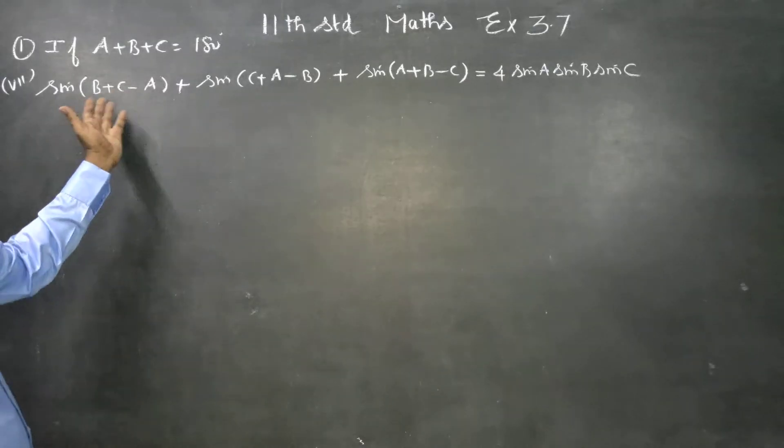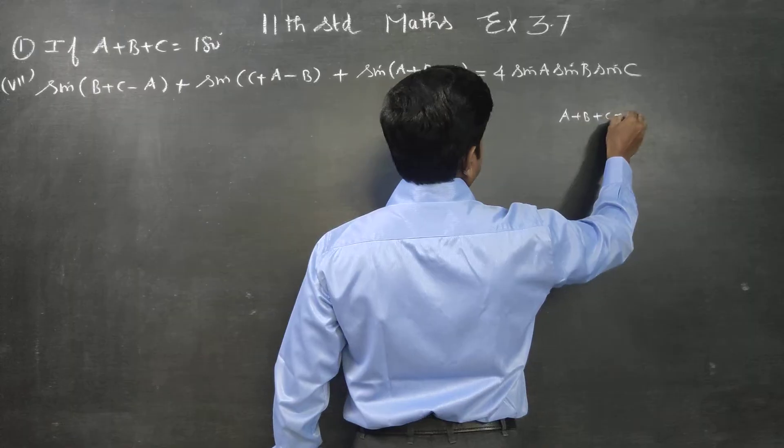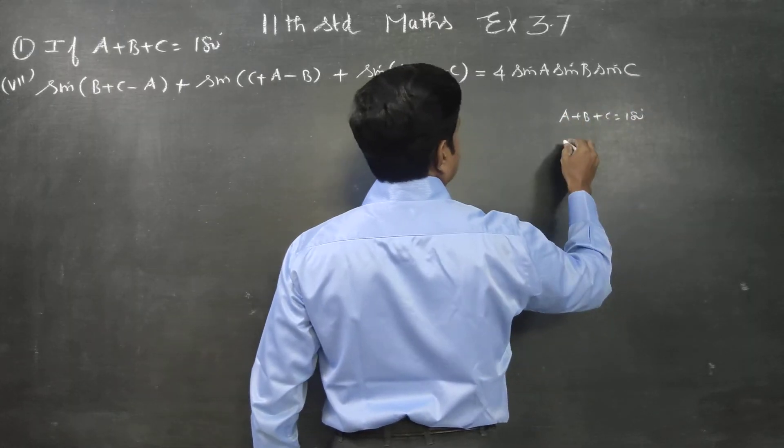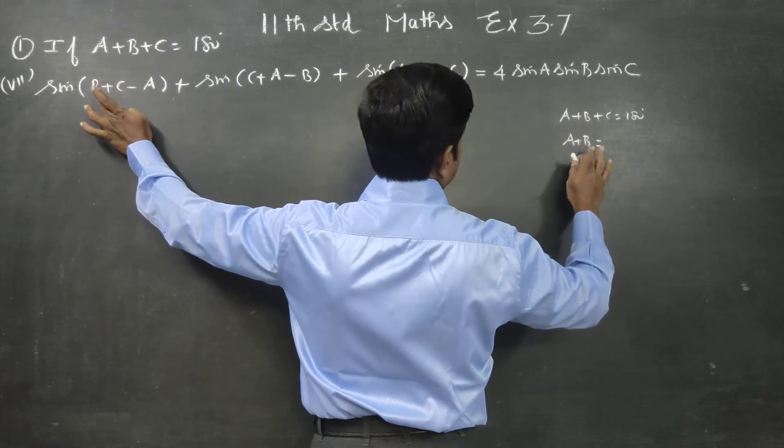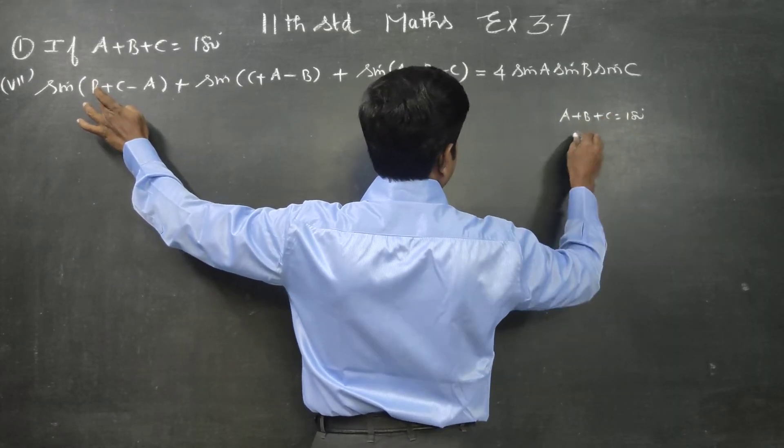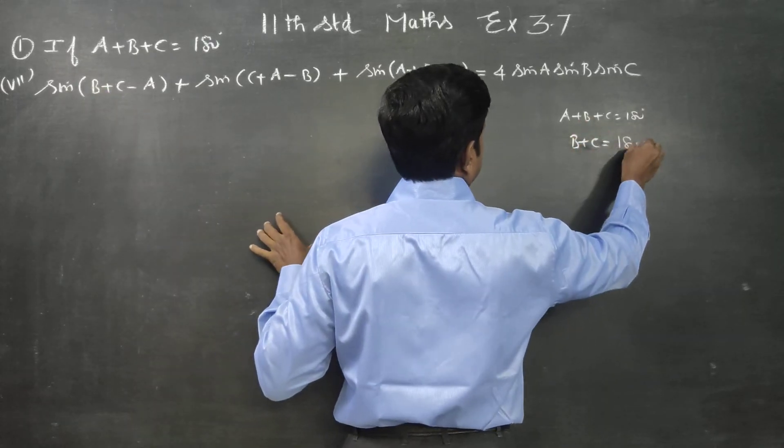Before entering into the sum, I know that A plus B plus C is equal to 180. What is A plus B? Sorry, B plus C. What is B plus C? B plus C is 180 minus A.